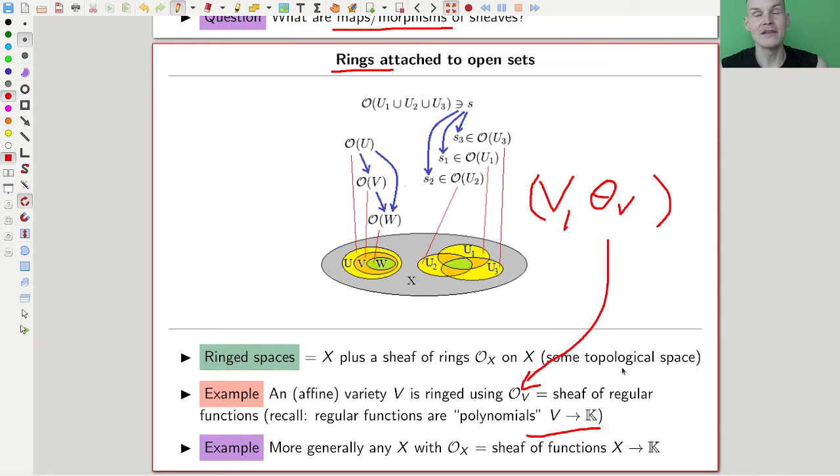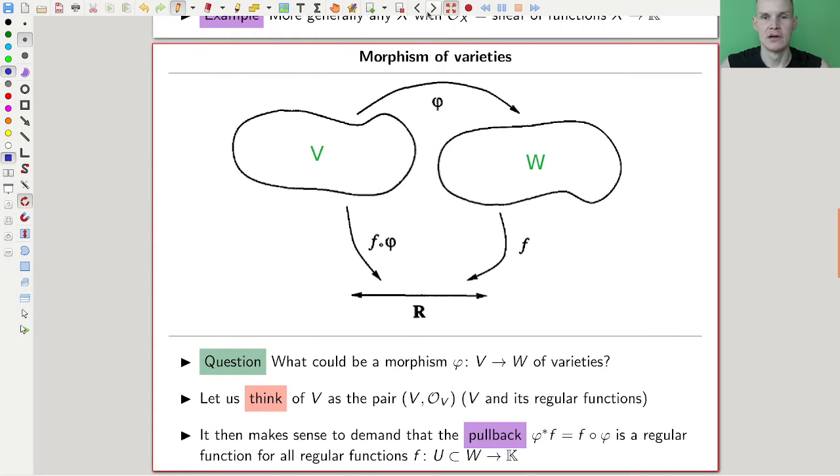Anyway, so we consider the space together with its functions, which is already much better. And that's what is the key example of ringed space, because now every open set in our variety has a ring attached to it, a ring of functions, and you could do that, of course, very, very general. Or any sheaf attached to it, and it would be any sheaf of rings, and it would be a ringed space, but really for this video, the main key example are those where there's some maps to the ground.